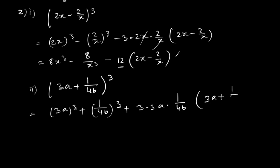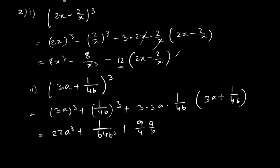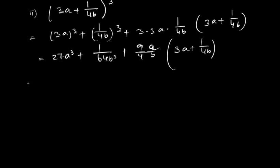Another question involves (3a + 1/4b)³. Applying the (a + b)³ formula gives 27a³ + 1/64·b³ + 9/4·ab·(3a + 1/4b).